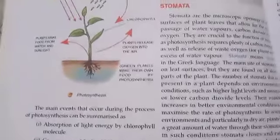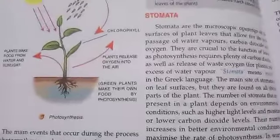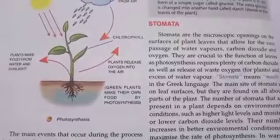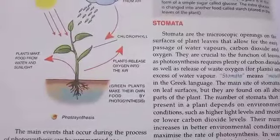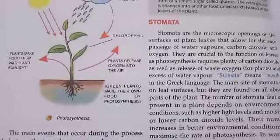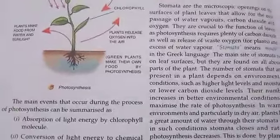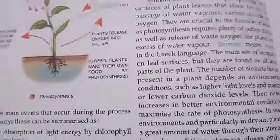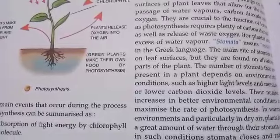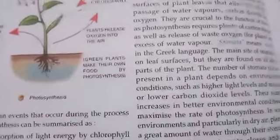Where does photosynthesis occur? Photosynthesis occurs in the leaves of the plant. Leaves have small microscopic openings on their surface called stomata, which allow the easy passage of water vapor, carbon dioxide, and oxygen. These tiny pores are crucial because photosynthesis requires plenty of carbon dioxide and releases oxygen as a waste product for the plant.